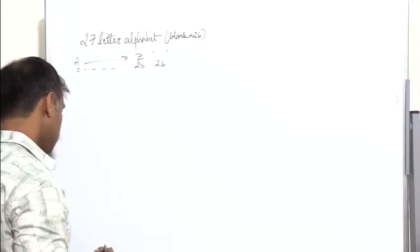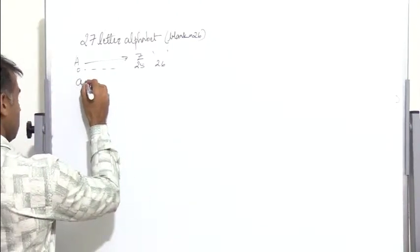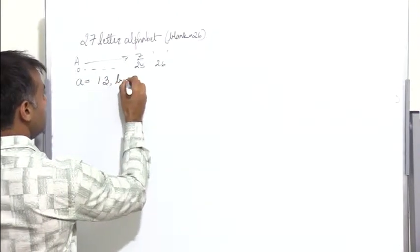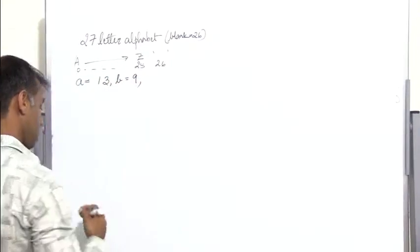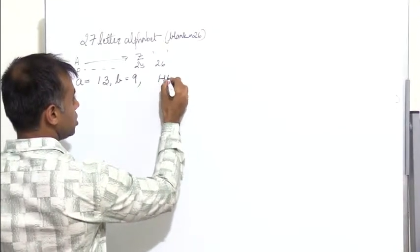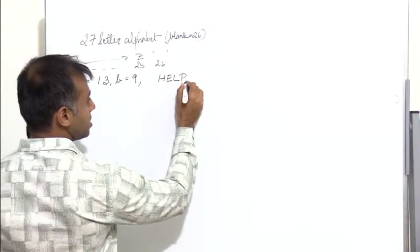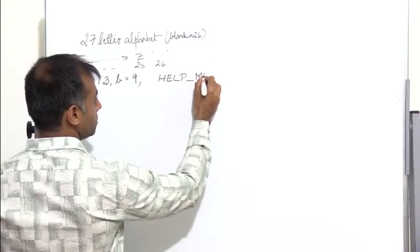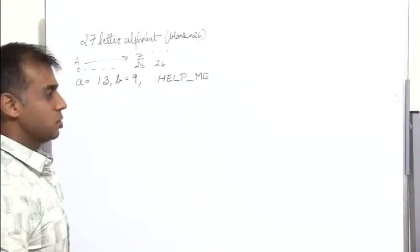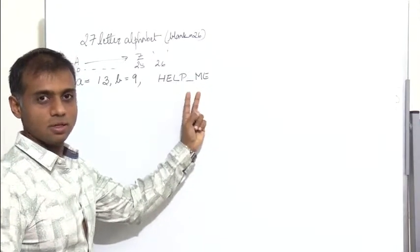Use affine ciphering transformation with key values a equal to 13, b equal to 9, and cipher the message: h, e, l, p, space, m, e. I have shown the blank by a dash so that we know there is a blank.